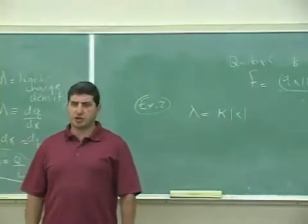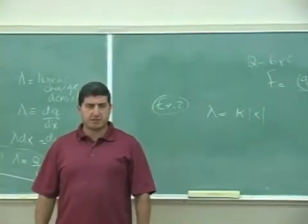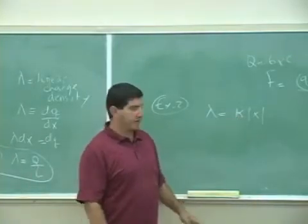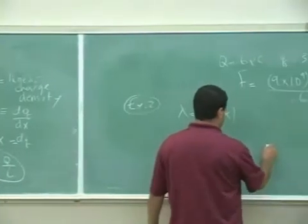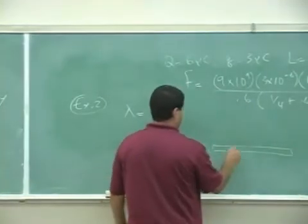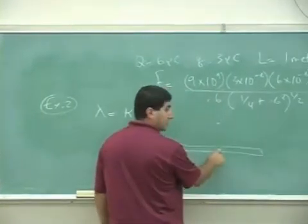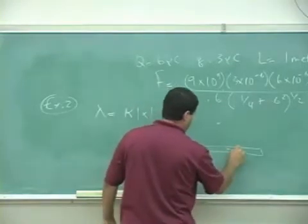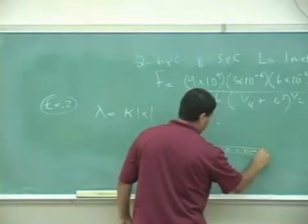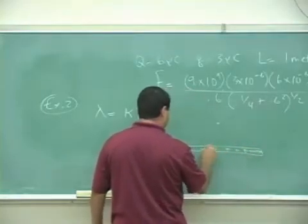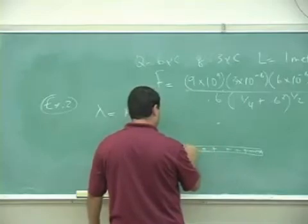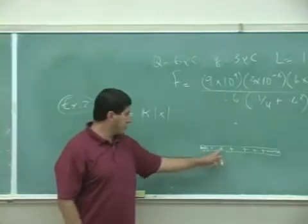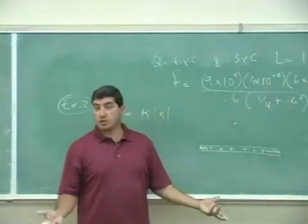Let's say the charge density of the rod is κ|x|. In other words, let's assume that the rod has this kind of behavior: in the center there isn't much charge, and as you go out to either side the charge density increases. That's what κ|x| means — the charge is more concentrated over here and more over here.